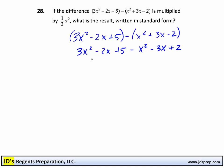So at this point, we just need to combine like terms. 3x squared minus x squared is 2x squared. Minus 2x and minus 3x is minus 5x. And then the last terms that can be combined is plus 5 and plus 2, which is plus 7.